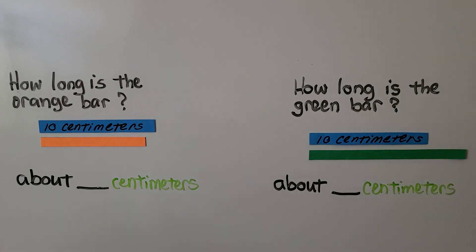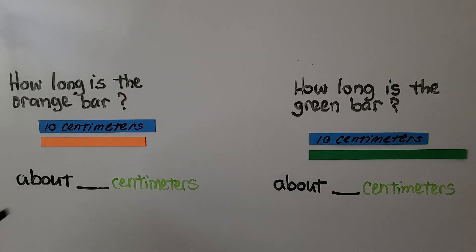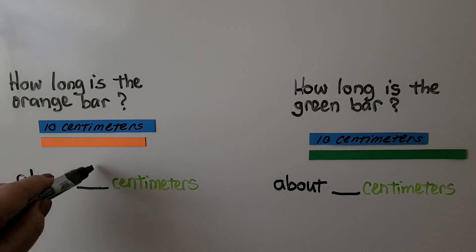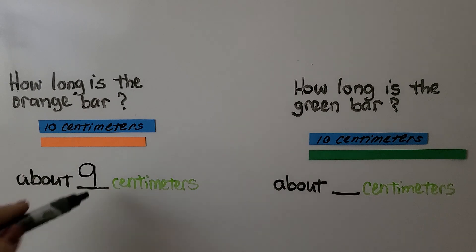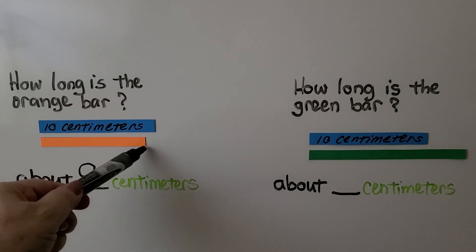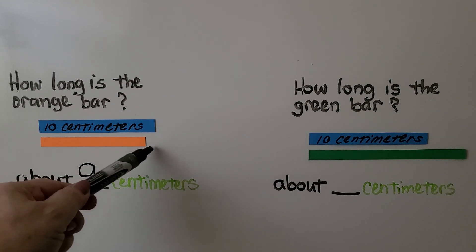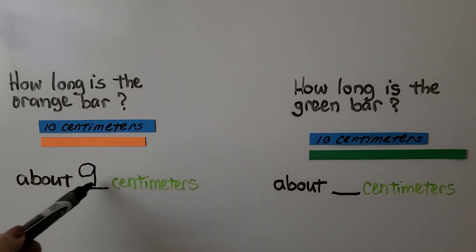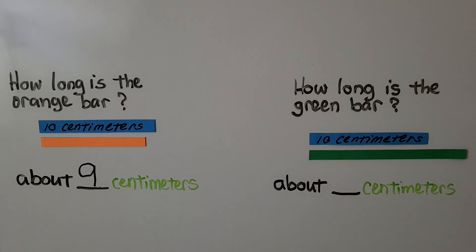About how long is the orange bar? If you said about 9 centimeters, you're probably right. Because if that's 10 centimeters, it looks like it's about 1 little centimeter shorter, so 9 would be a very reasonable estimate.